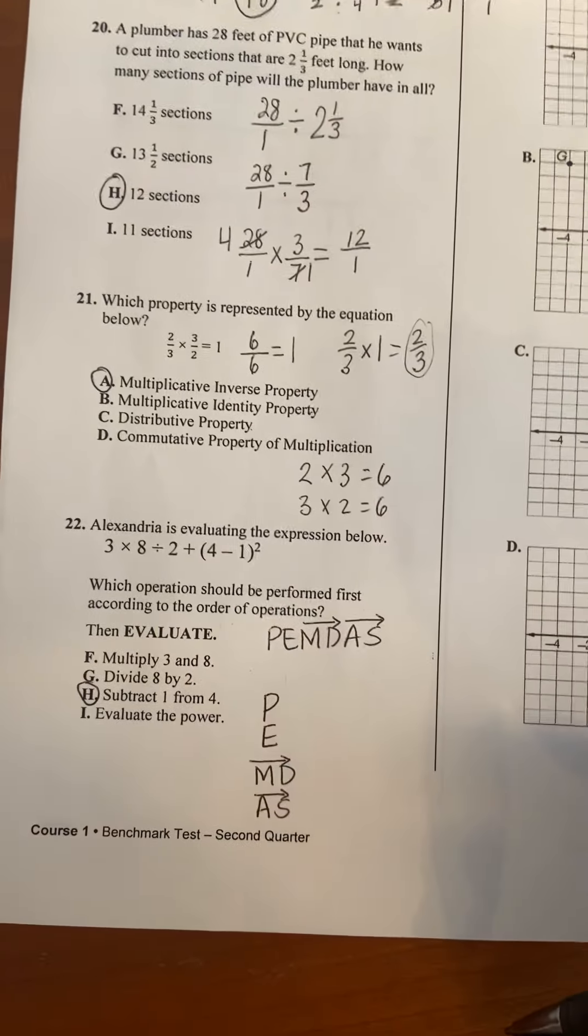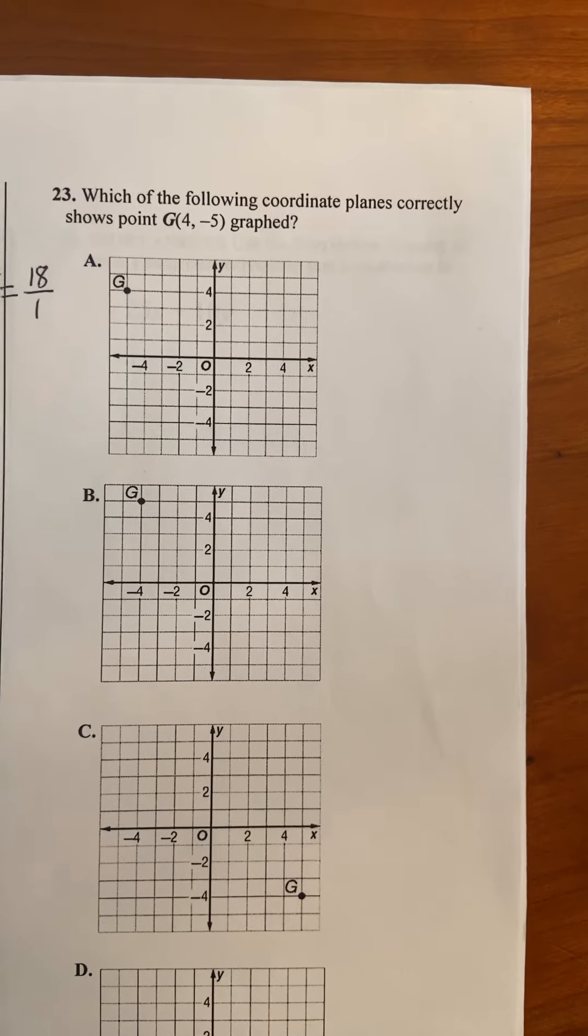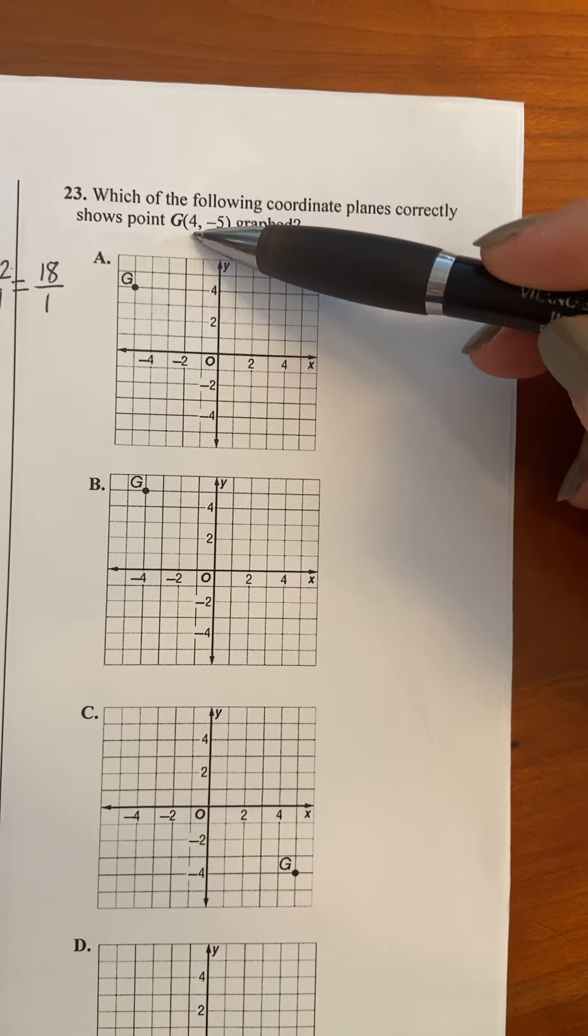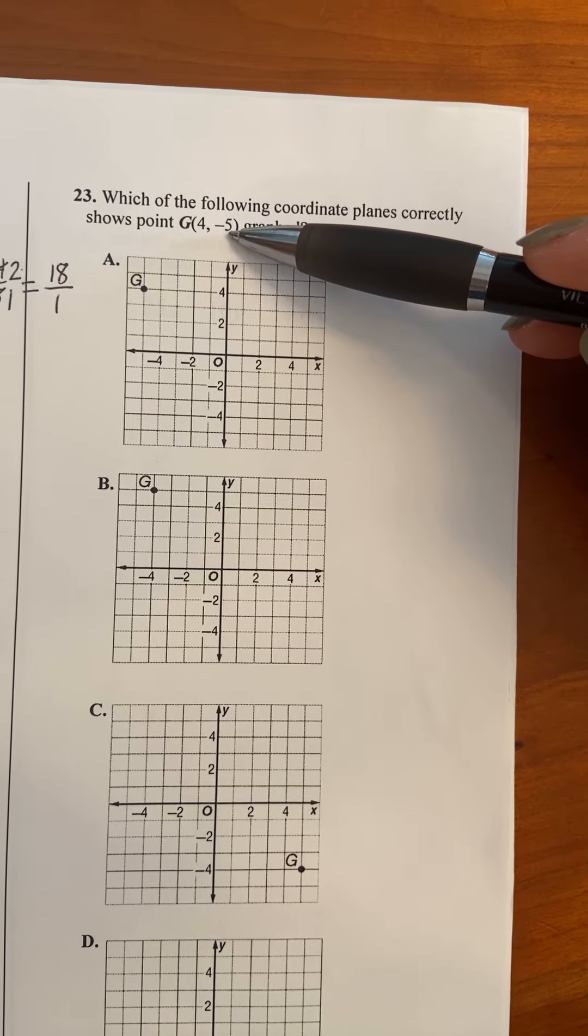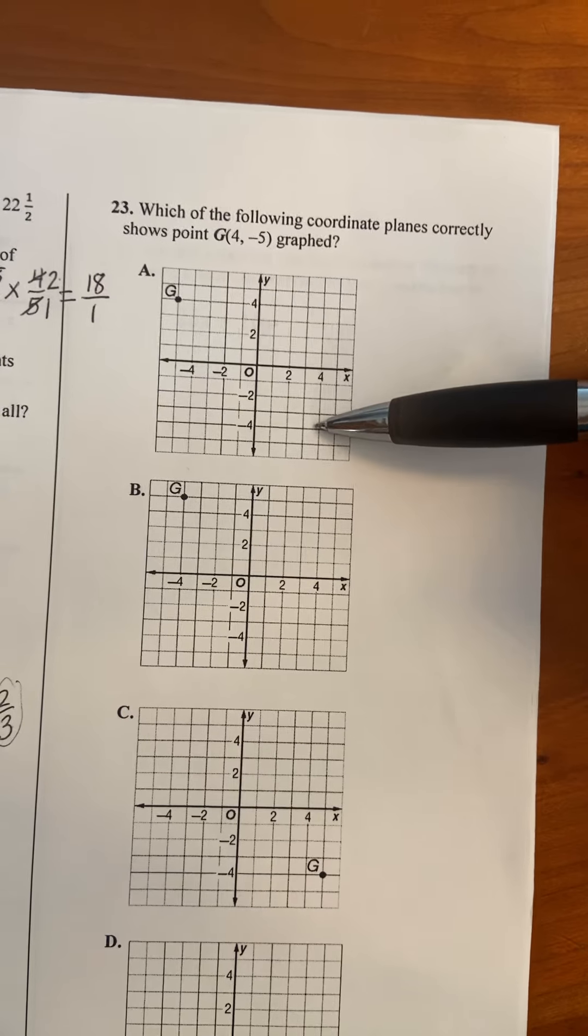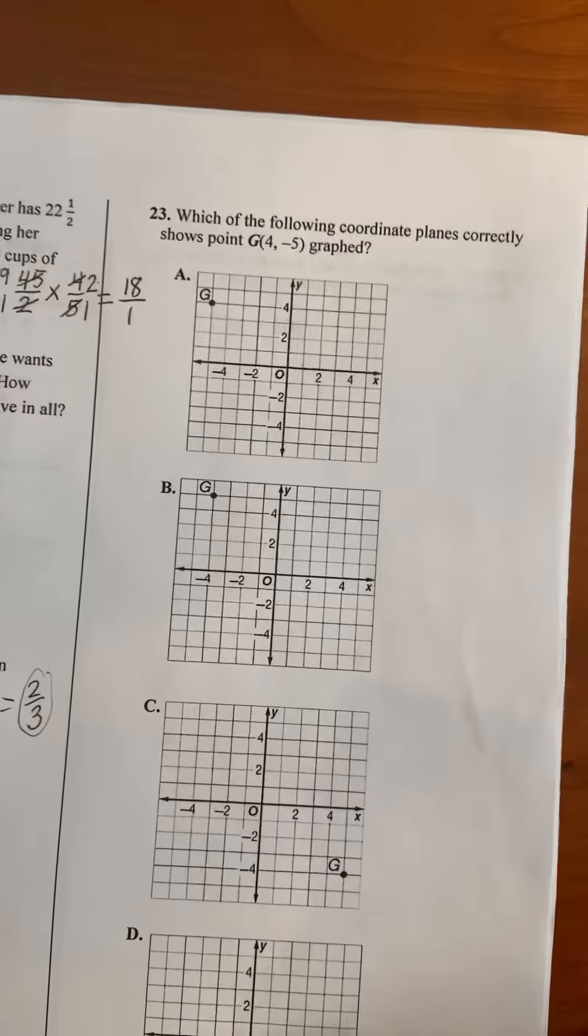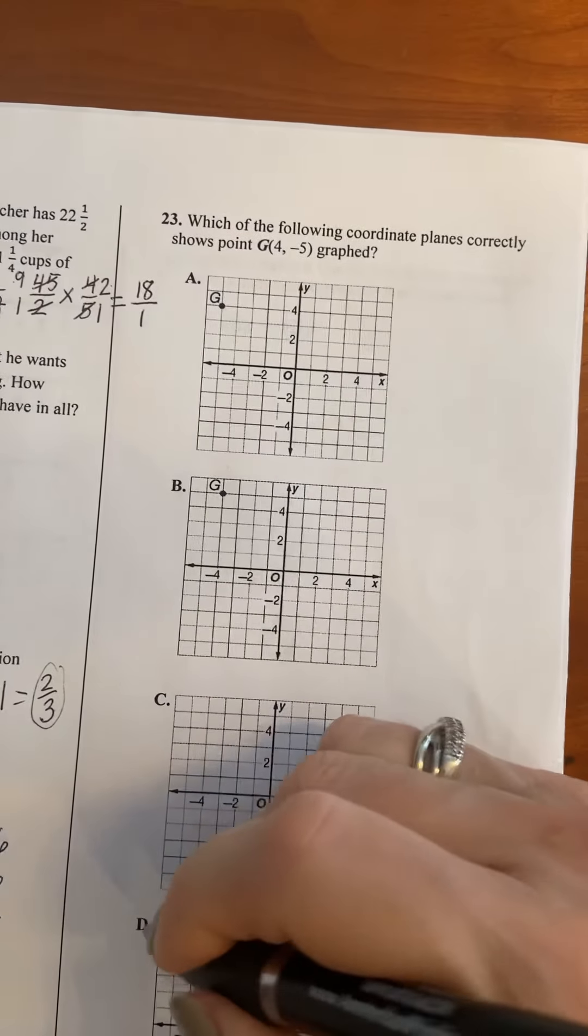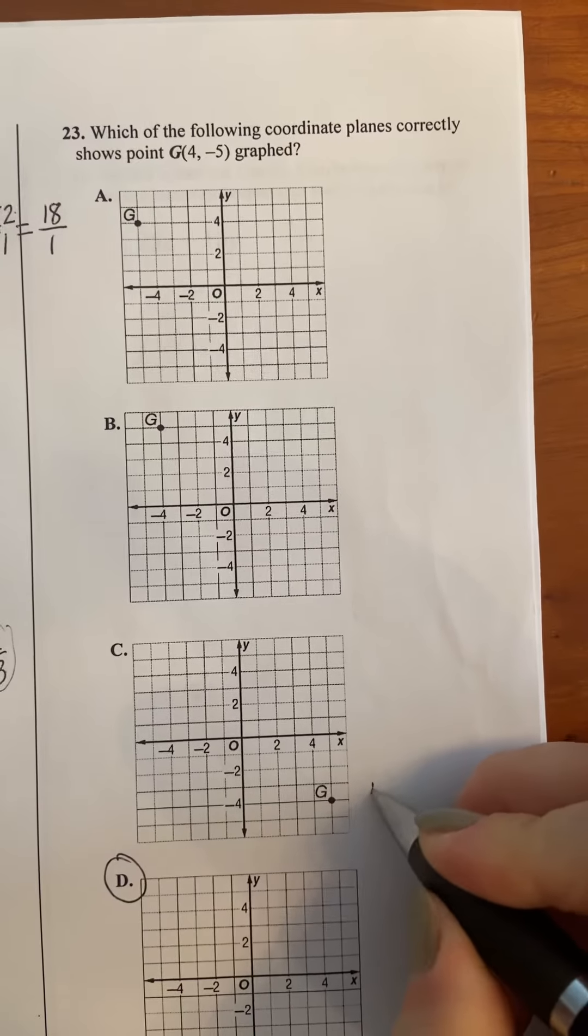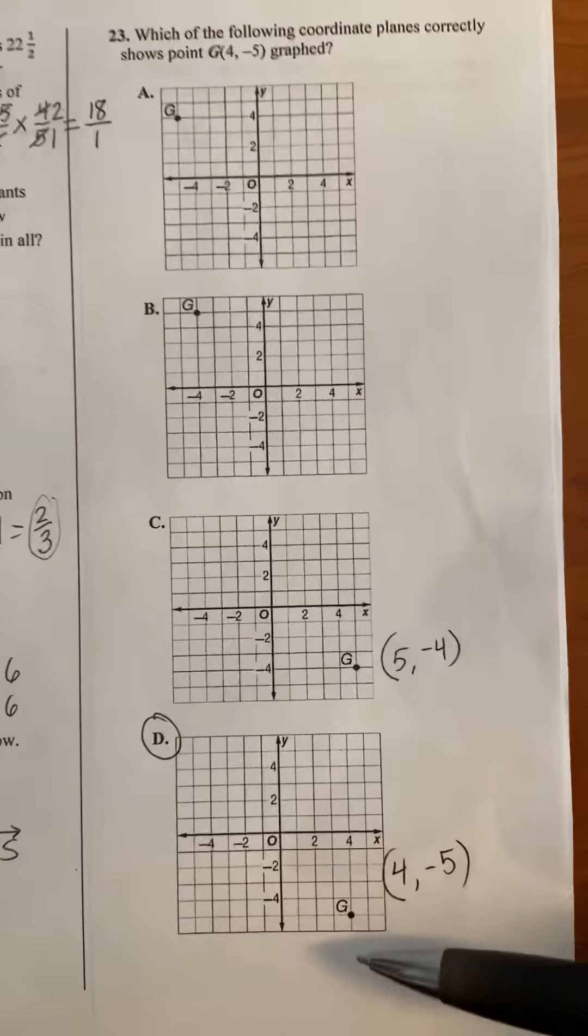For number 23, which of the following coordinate planes correctly shows the point G, which is at 4 negative 5? Just remember the 4 is the x value. It's telling you to move across, and because it's positive you move to the right. The second number is the y value. Because it's negative you're going to be moving down. So you need to go over to the right 4, and then down 5. So if I go over 4, down 5, I don't see a point. Over 4, down 5. Over 4, down 5. That is very close but that is not correct. Over 4, down 5. It's D. What they did with this one is they reversed the numbers. They went over 5 and down 4. So this point is actually at 5 negative 4, and the correct one should be at 4 negative 5. So these two are close. You just had to really pay attention to the details on this one.